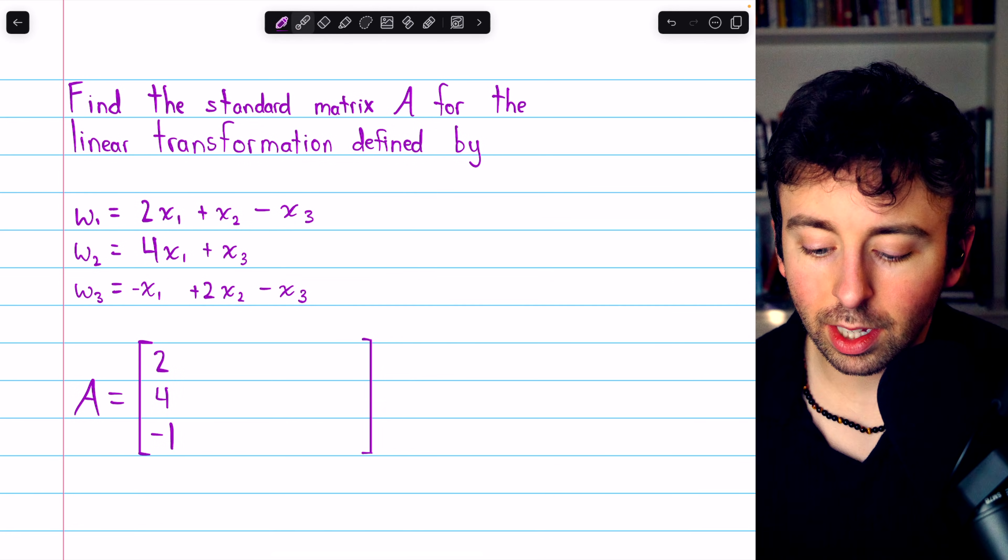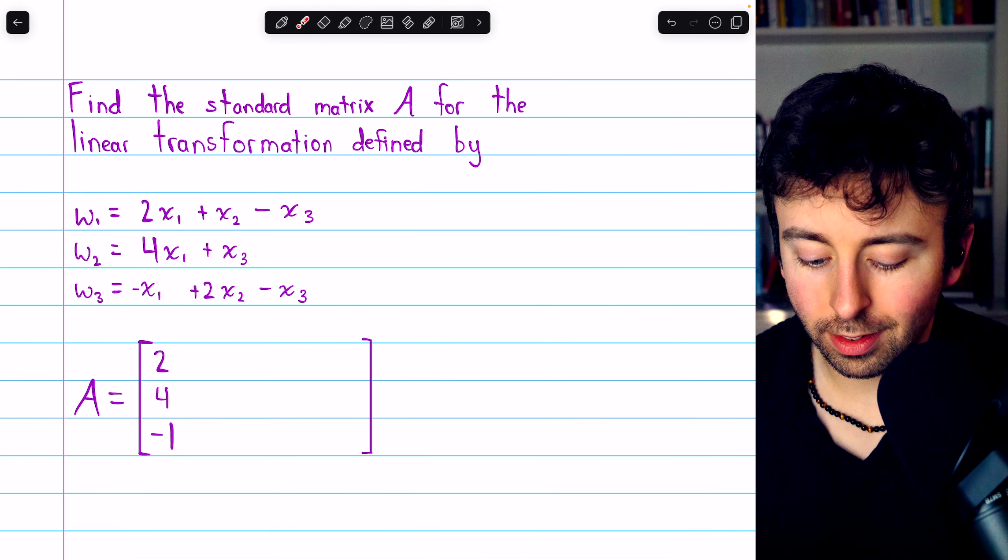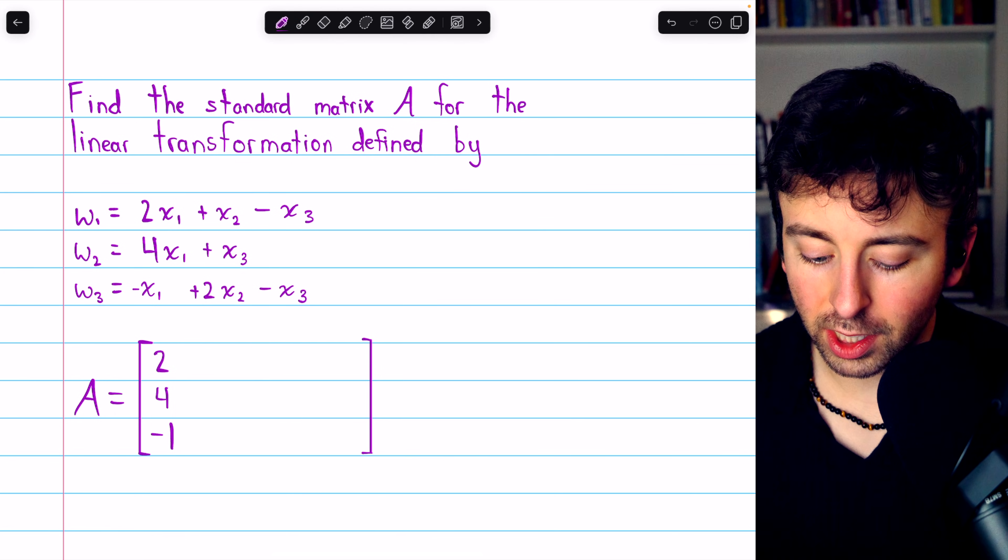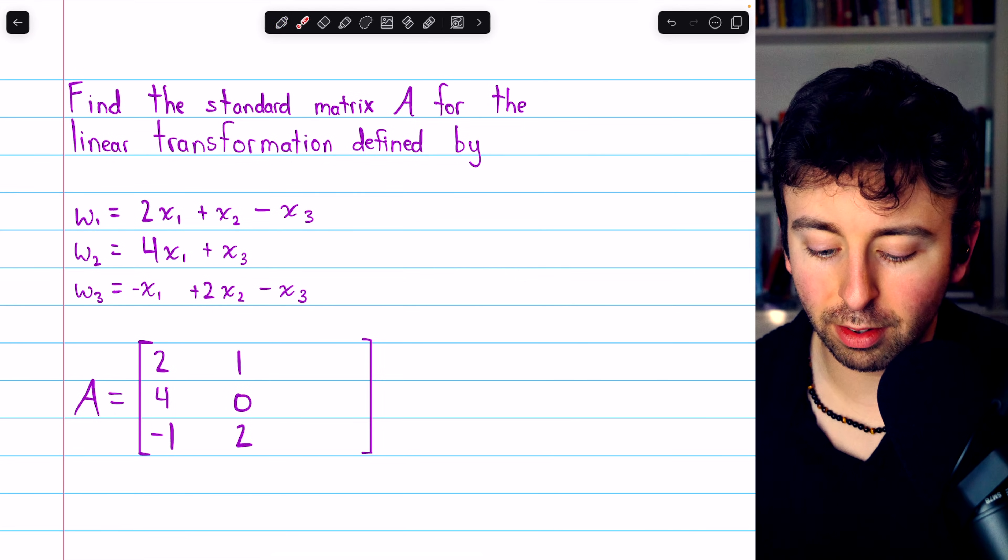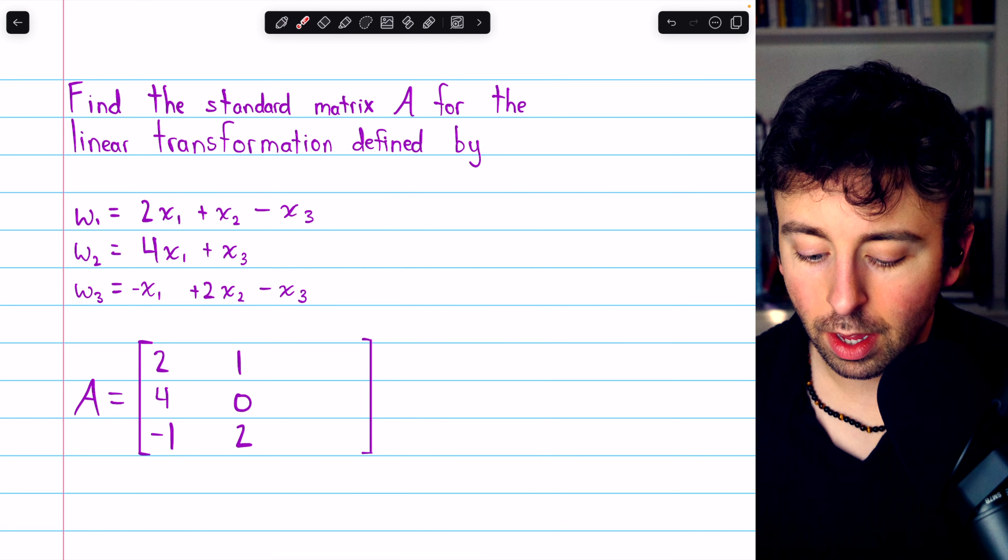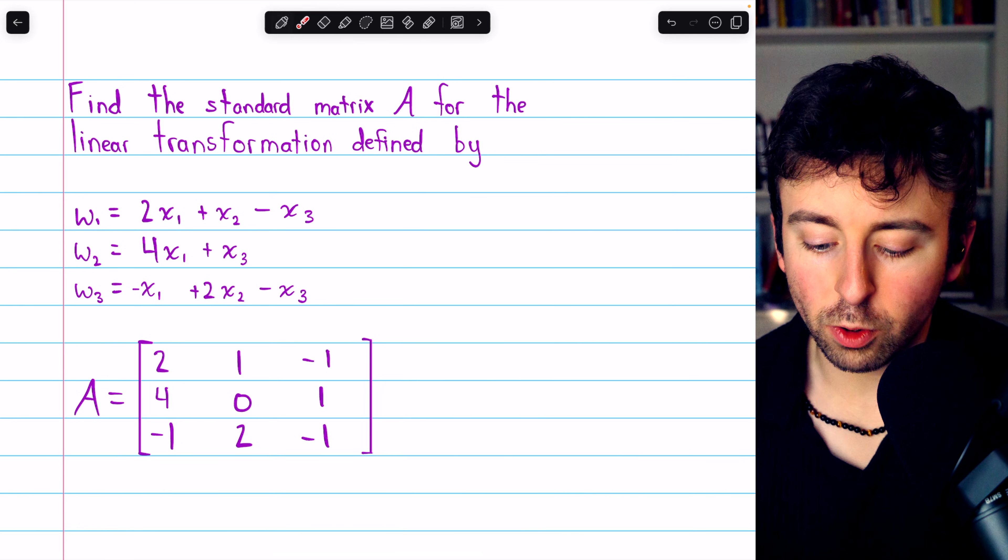For the second column, we look at the coefficients of x2, which are 1, 0, 2. And for the final column, coefficients of x3: negative 1, positive 1, negative 1. And that is our standard matrix for the transformation.